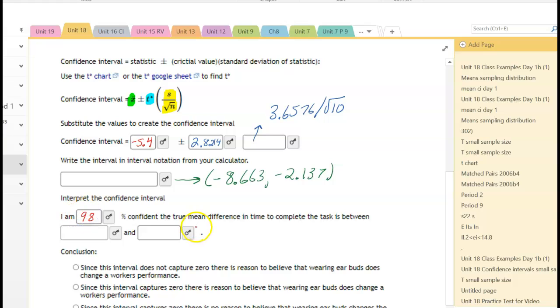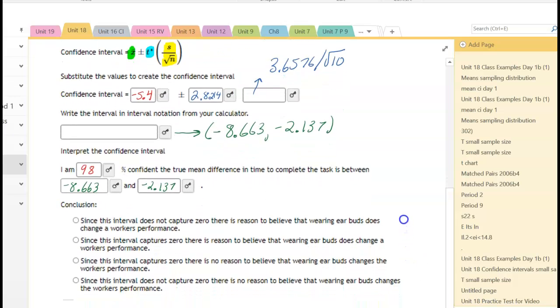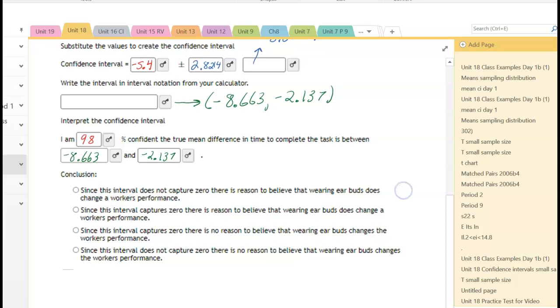So then you could say, I am 98% confident that the true mean difference in time to complete the task is between, and we're going to use the green numbers, negative 8.663 and negative 2.137. What that means is when they were wearing earbuds, their time decreased somewhere around negative 8.6 minutes and negative 2.13 minutes.